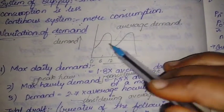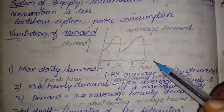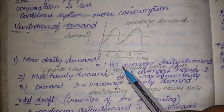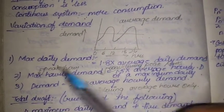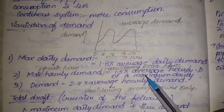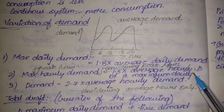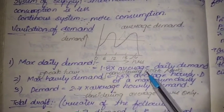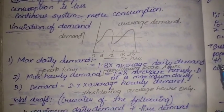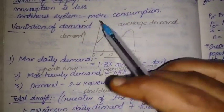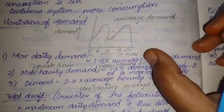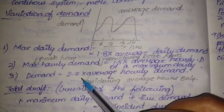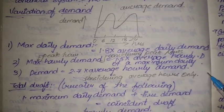The maximum daily demand is 1.8 times the average daily demand. The maximum hourly demand is 1.5 times the average hourly demand of the maximum daily. So the maximum hourly demand equals 1.5 × 1.8 = 2.7 times the average daily demand.